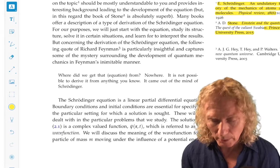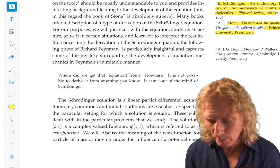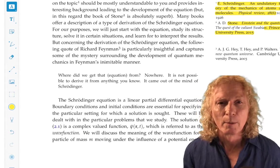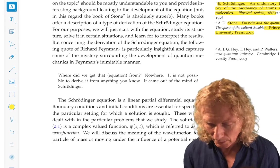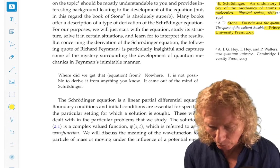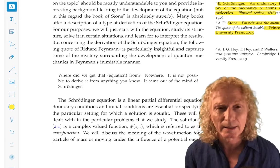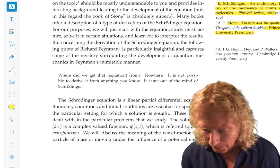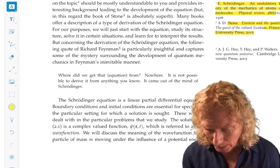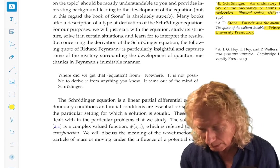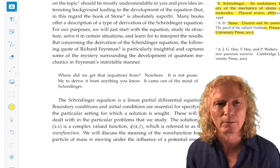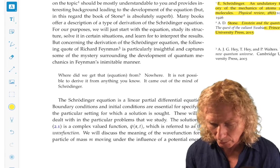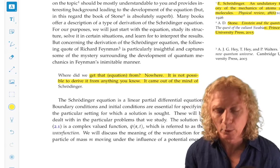But we're going to be taking Feynman, Richard Feynman's approach in some sense, and his famous quote is: Where did we get that equation from? Nowhere. It is not possible to derive it from anything you know. It came out of the mind of Schrödinger. So we're going to proceed from that point.